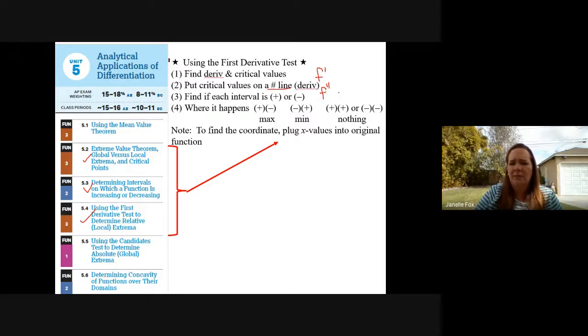And you might want to say those words, right? You could say, since the derivative goes from positive to negative, we know the function goes increasing to decreasing. So F of X has a maximum. Like you want to say those words, explaining yourself. If for some reason the number line goes from a plus to a plus or a negative to a negative at a spot, nothing happens there. If you wanted to find the actual coordinate of these things, you're going to plug in the X values into the original function, of course, because the original function is where you would get your coordinates.